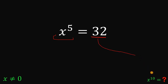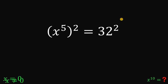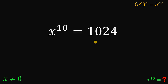What we want is the numerical value of x raised to the tenth power. So let's square both sides. Using the law of exponents — b raised to the power a, raised to the power c, equals b raised to the power a times c — squaring gives us 2 times 5 equals 10. So the left-hand side is x raised to the power of 10, and x raised to the power of 10 equals 32 squared. Simplifying, 32 times 32 gives us 1024.